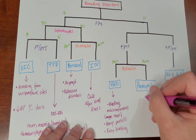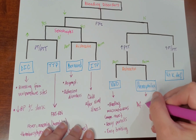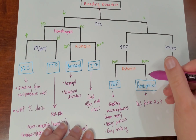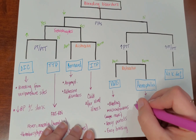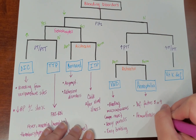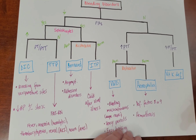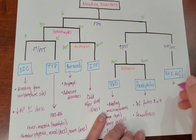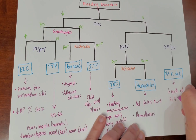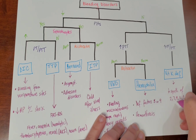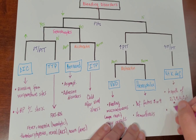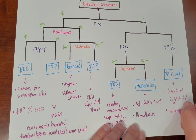For hemophilia, you're going to have a deficiency of factors 8 or 9. For this reason, you'll see that PTT will be increased. A kind of giveaway is hemarthrosis, where you'll see bleeding into joints, and it can be painful. And lastly, for vitamin K deficiency, this is going to affect synthesis of factors 2, 7, 9, 10, proteins C and S. Now because it includes factor 7, we're going to have that increase in PT. This patient might have a history of taking warfarin.